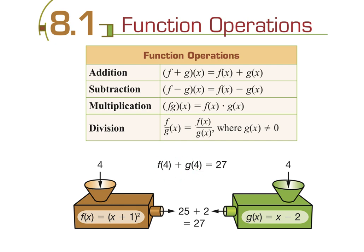You can add functions after the fact — input into each, then add the two outputs. So 25 plus 2 gives an answer of 27. Or you can do it before the fact: combine (x + 1) squared plus (x − 2) into a new function, FOIL and combine like terms, then plug in 4. You'll also get 27.